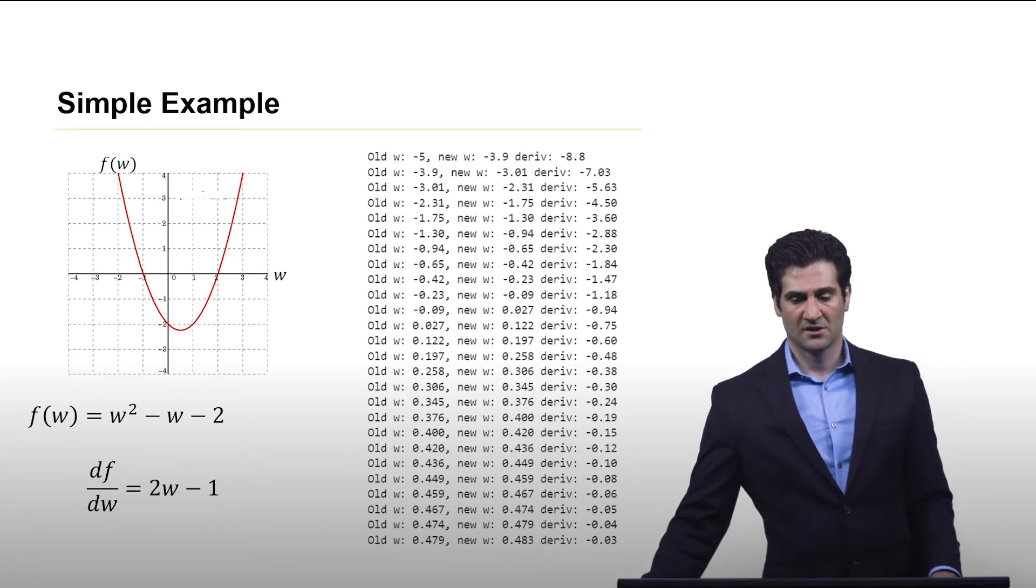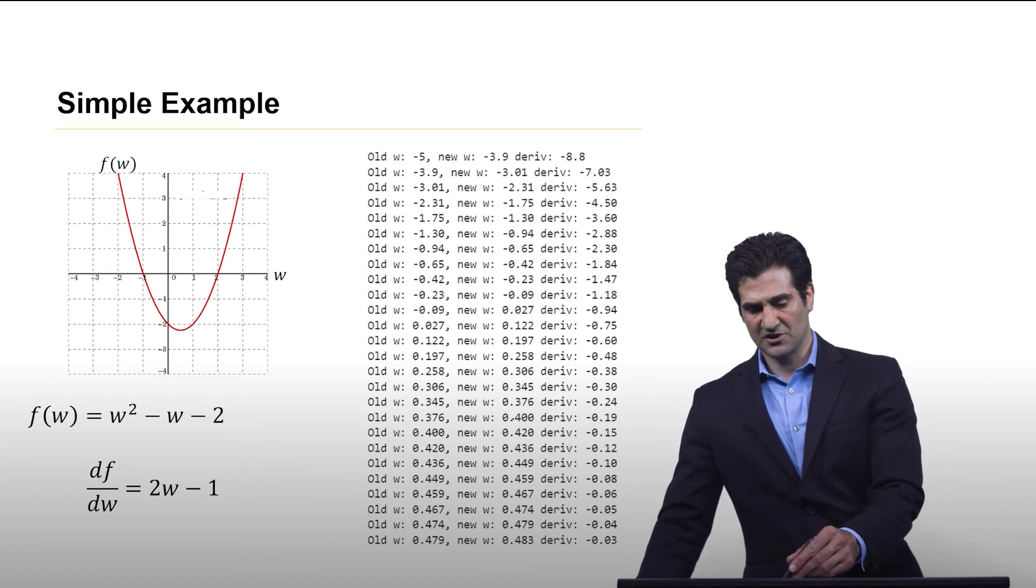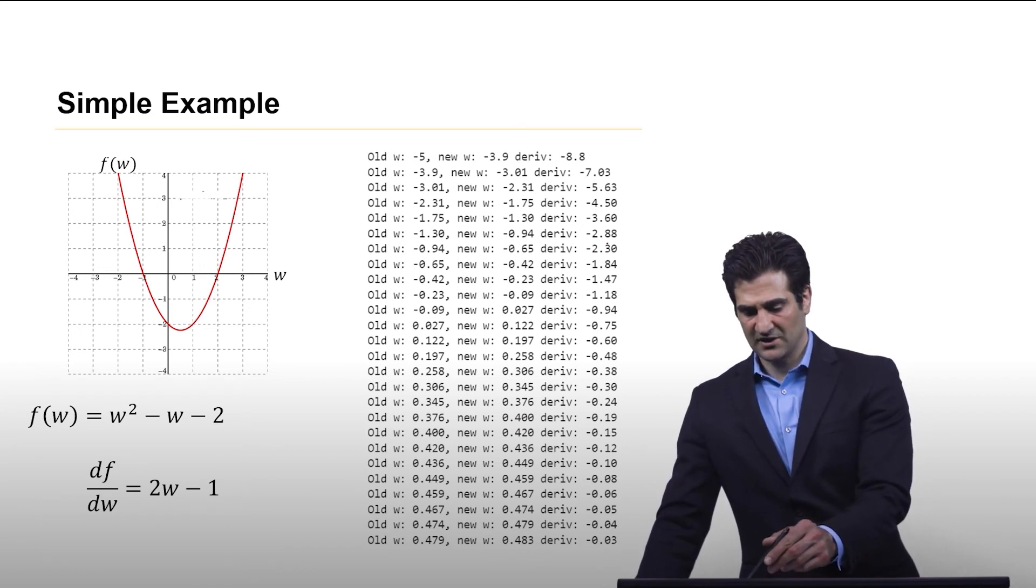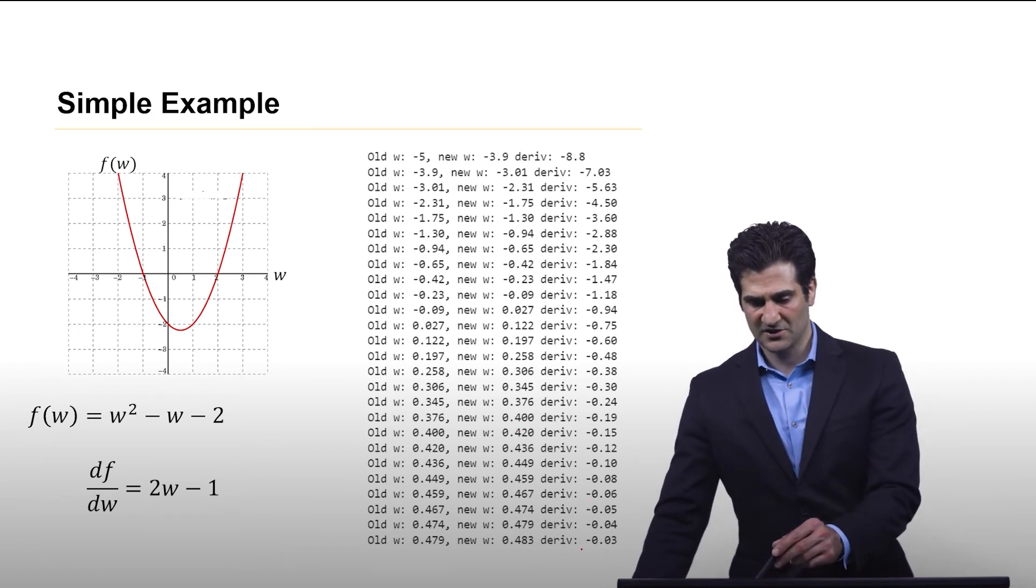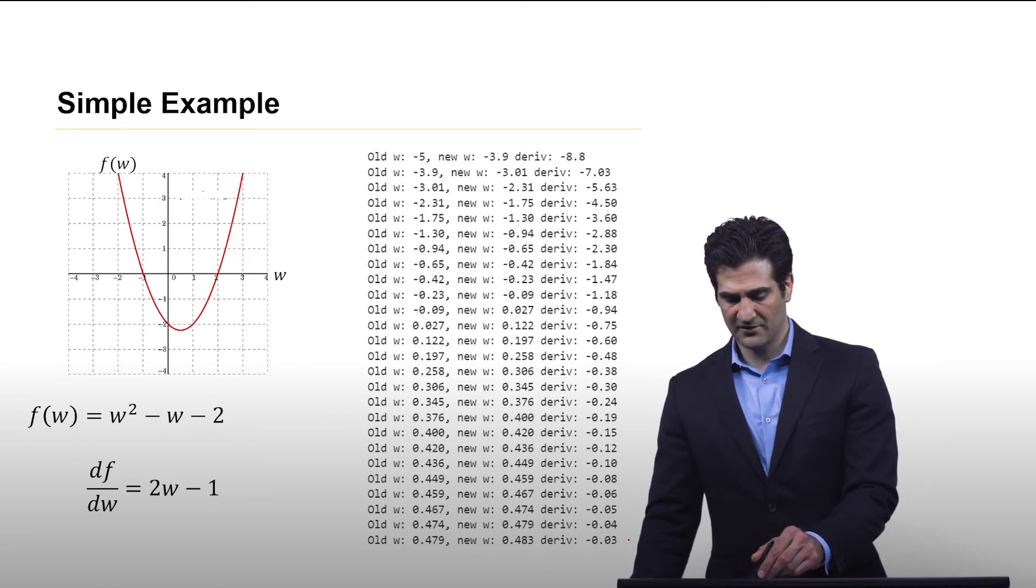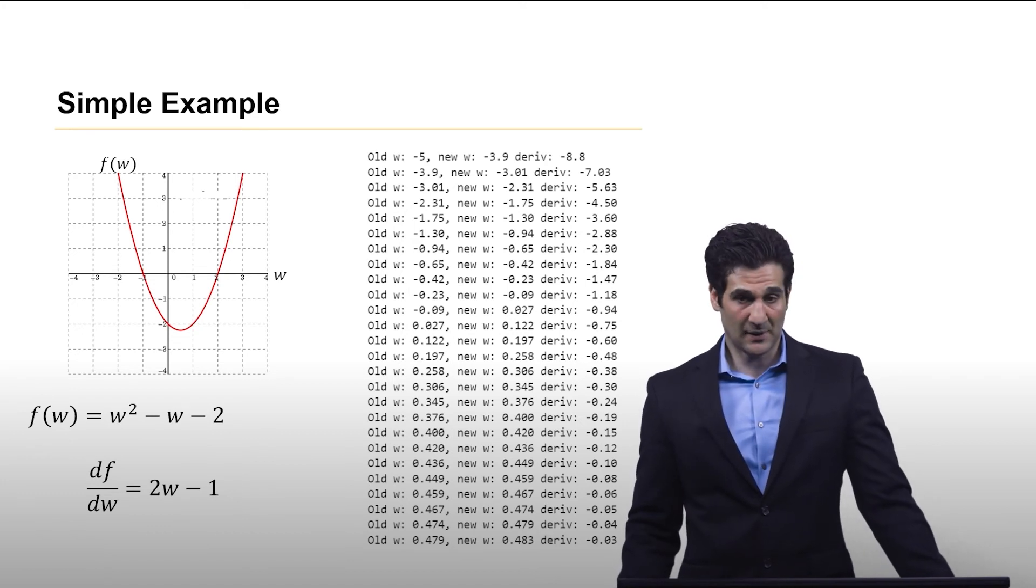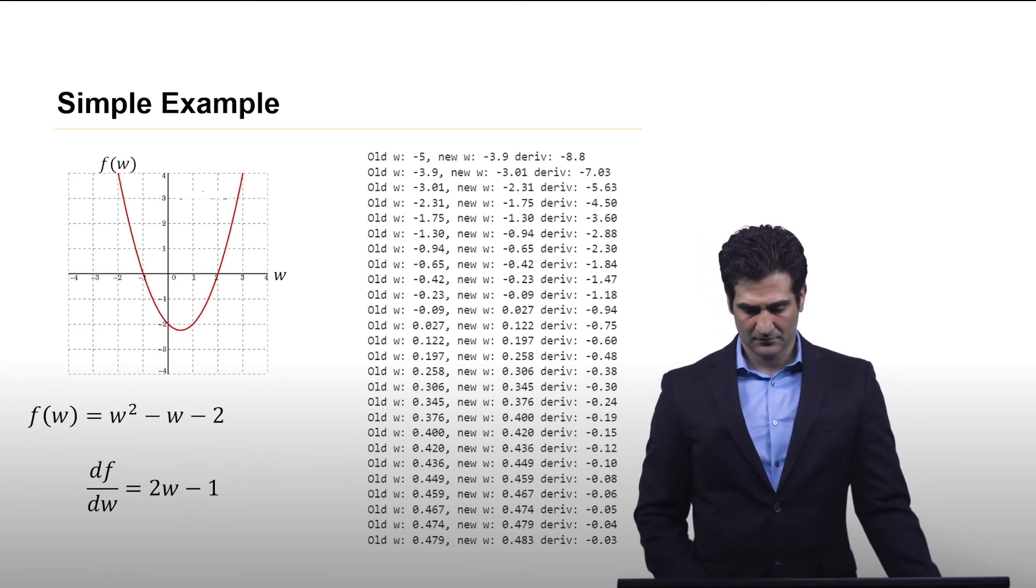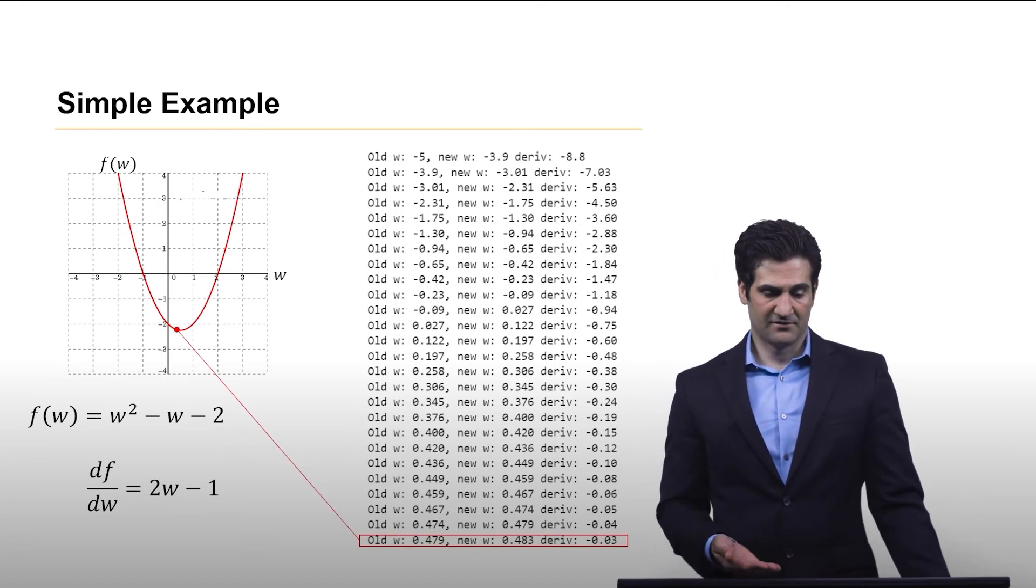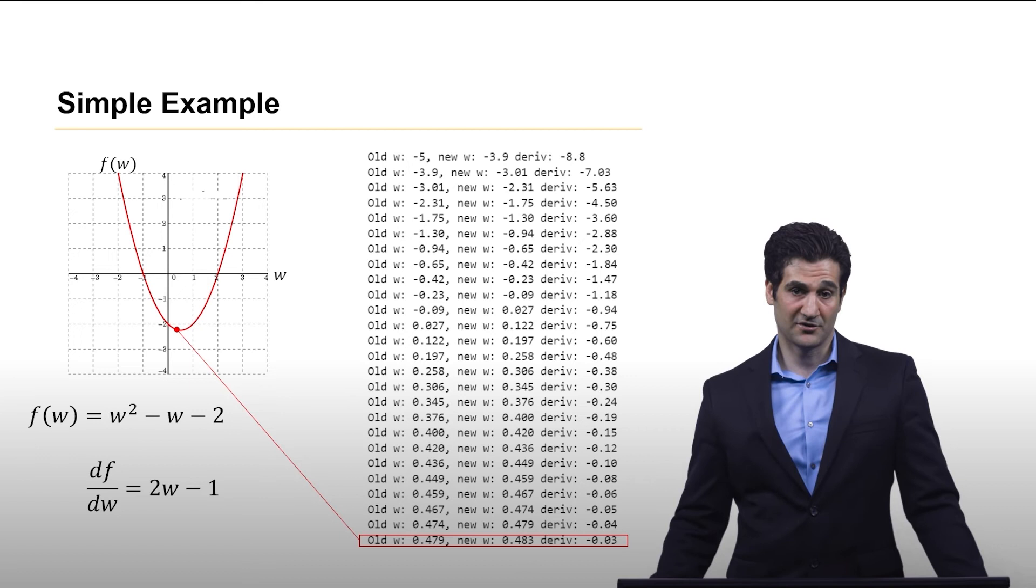So with that Python code implemented, this is what we get. We see the old w value, and we see what it changes to, and we see the resulting derivative. And as you see, as this progresses onward, that derivative, the value of the derivative, gets smaller and smaller until it stops. It's almost at 0. So it's very close to the global minimum for this function.